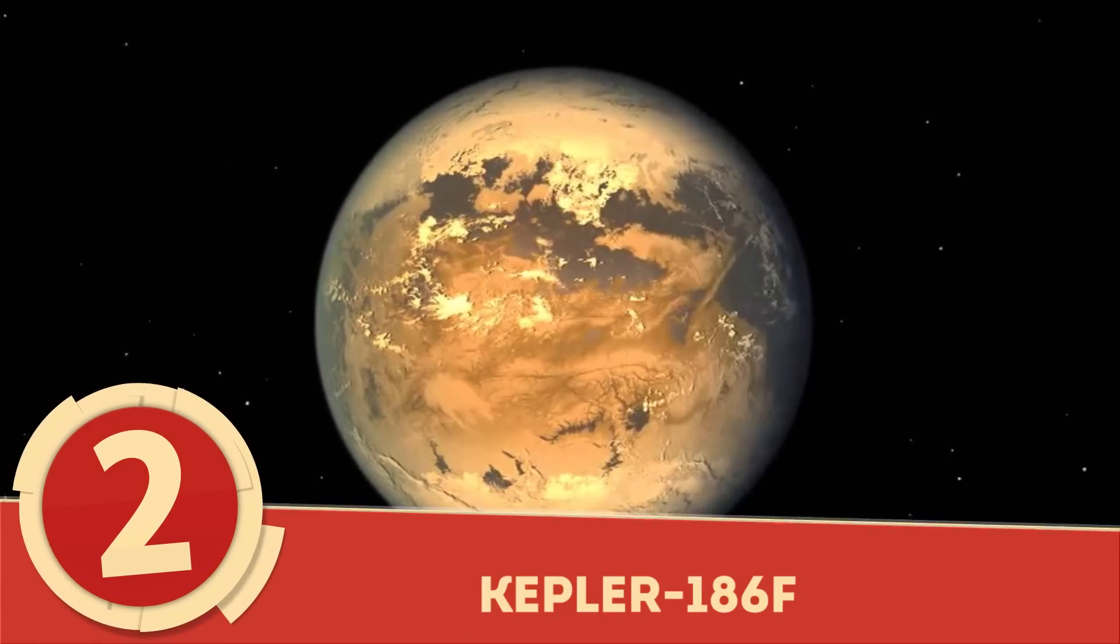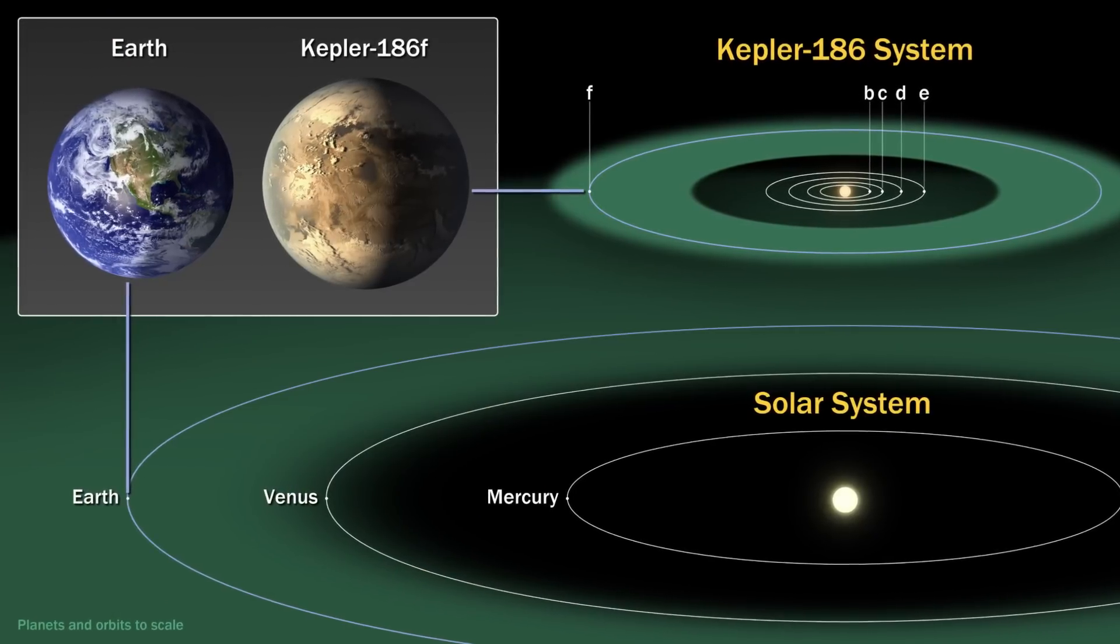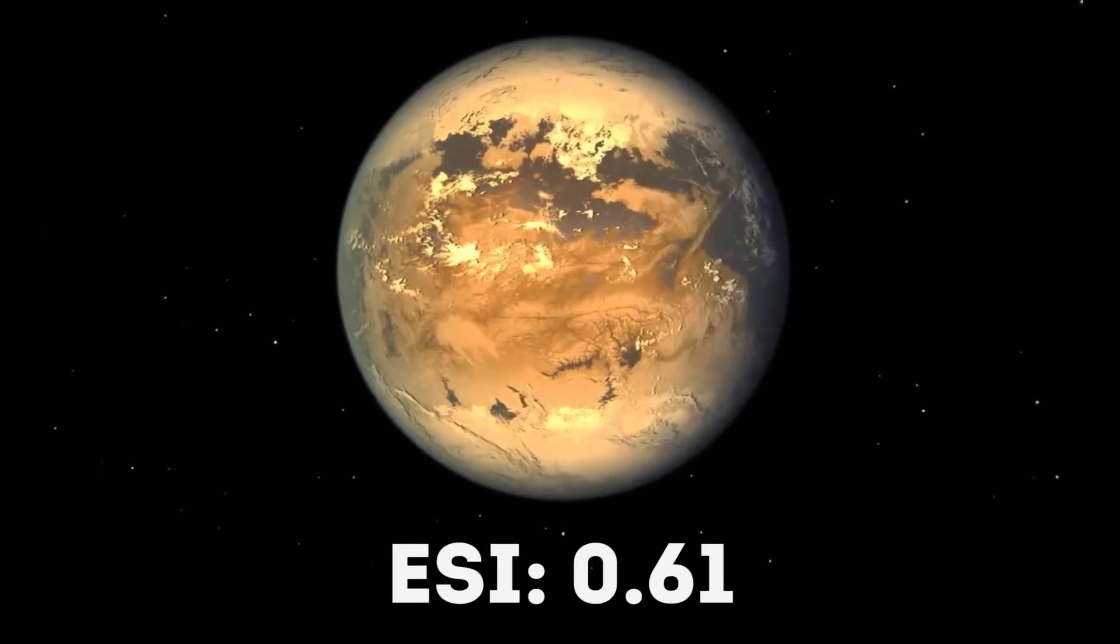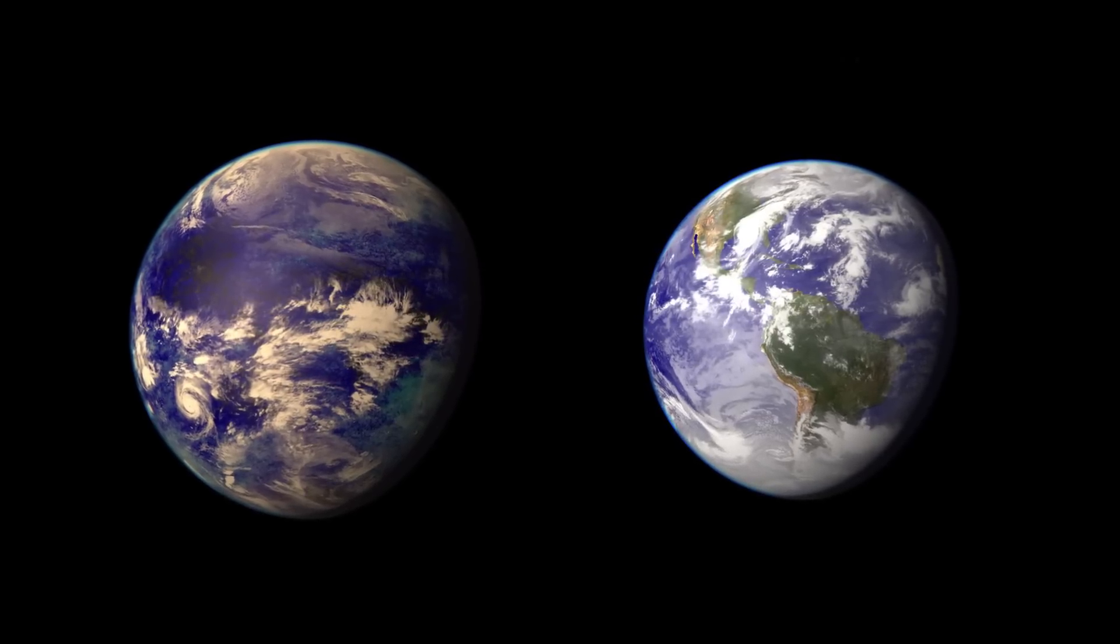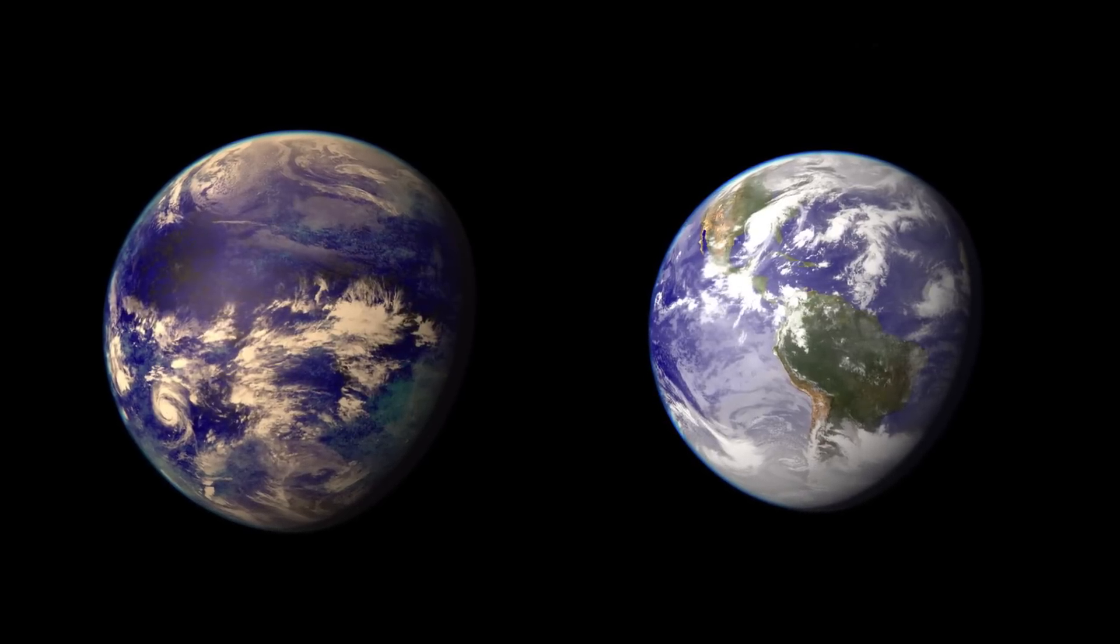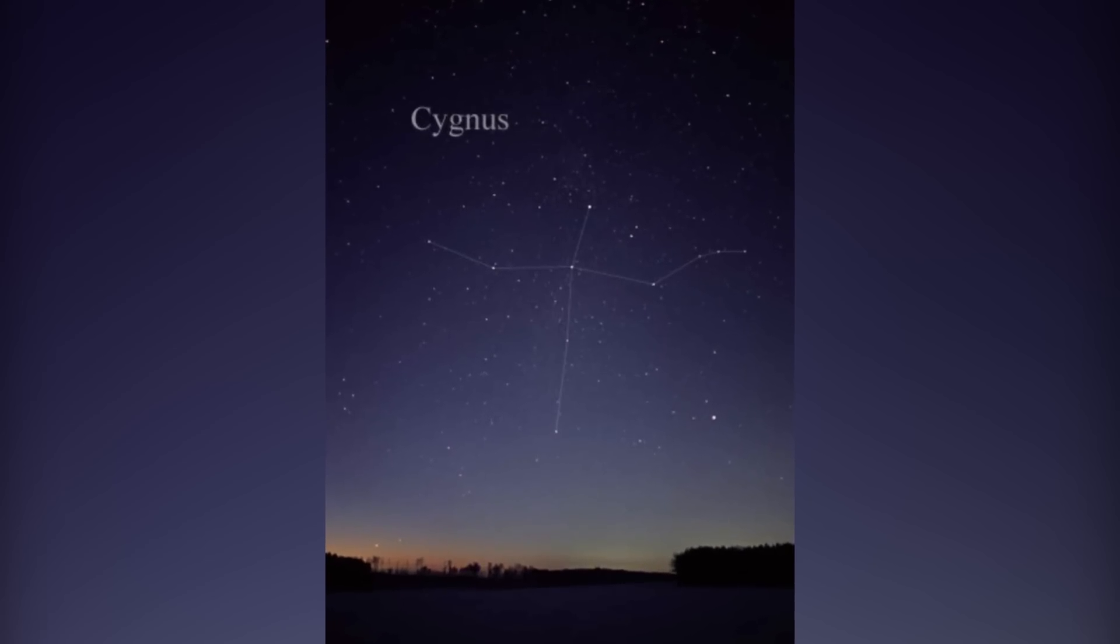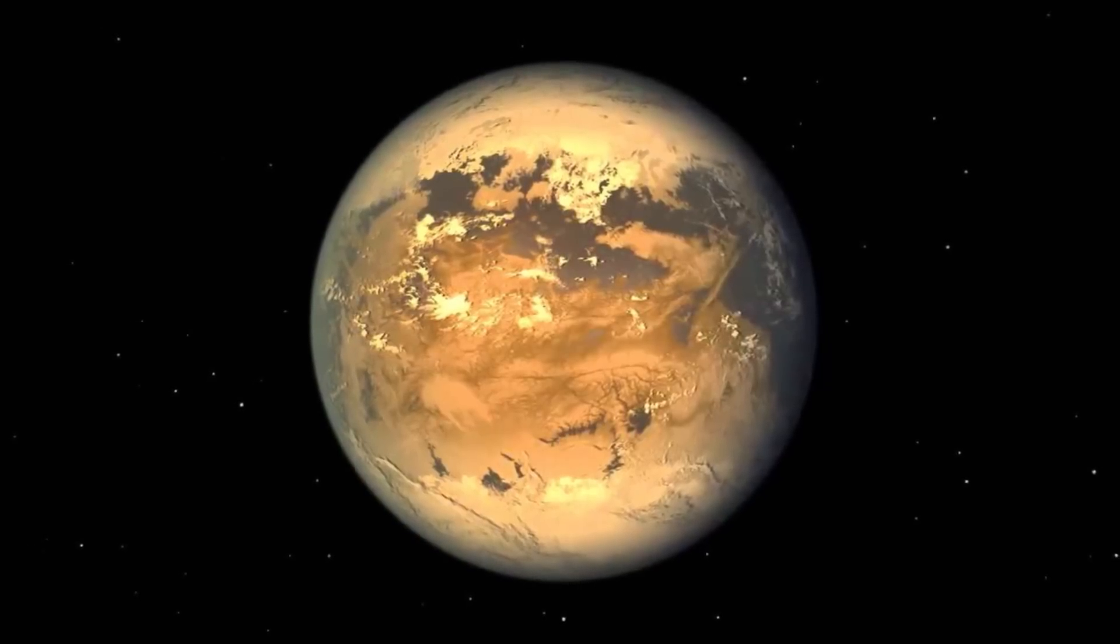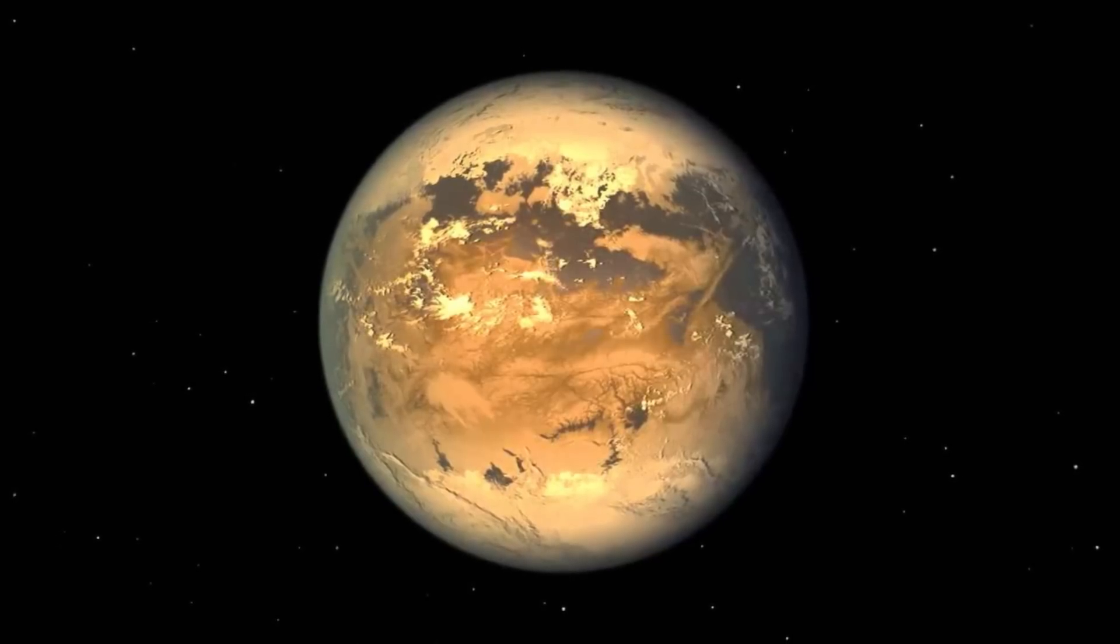Number 2: Kepler-186f. Kepler-186f of the Kepler-186 system may only have an ESI of 0.61, but the 2014 discovery is the first Earth-like exoplanet to have a radius similar to Earth's, measuring in at about 10% larger. Found 500 light-years from Earth in the Cygnus constellation, 186f has an orbital period of 130 days, and only receives one-third the energy from its star that Earth receives from the Sun.